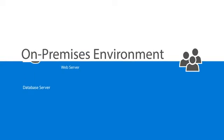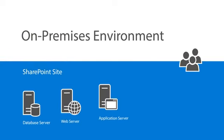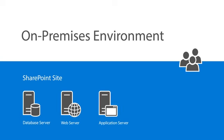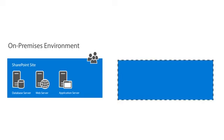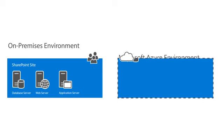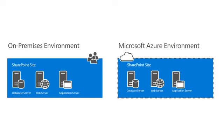Consider this on-premises SharePoint site with a web server, application server, and Microsoft SQL Server. If something goes wrong, it helps to have a replica of your system ready to use while you troubleshoot. You can connect your on-premises environment with a similar one in Azure using a VPN tunnel.